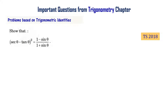Show that sec theta minus tan theta whole square equals 1 minus sin theta divided by 1 plus sin theta. This is a Telangana final exam 2018 problem involving trigonometric identities. In this video, let us discuss how to solve this problem.